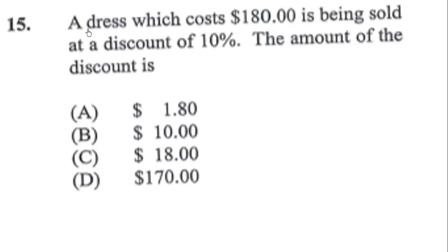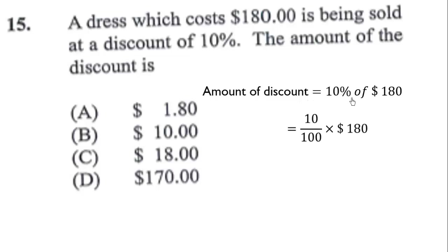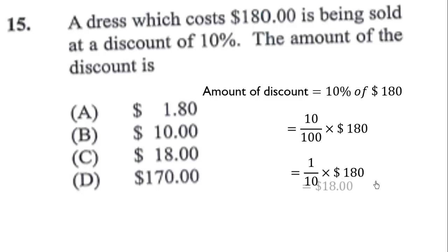A dress which costs $180 is being sold at a discount of 10%. The amount of the discount is: 10% of $180 = (10/100) × $180 = (1/10) × $180 = $18. Therefore the correct answer is $18.